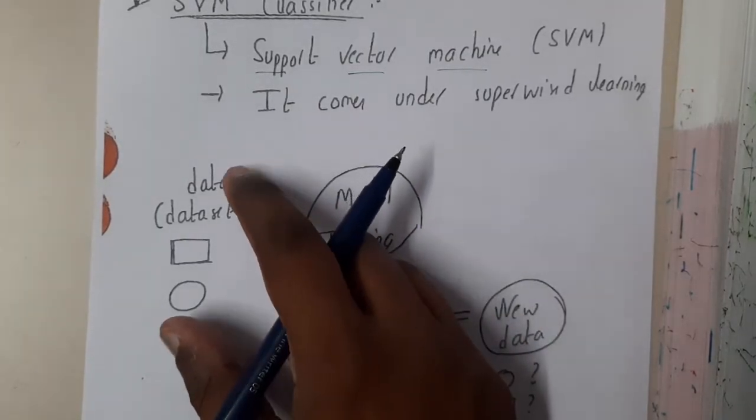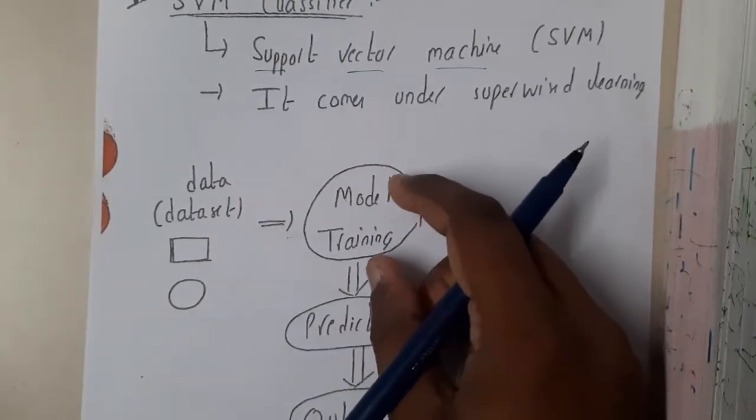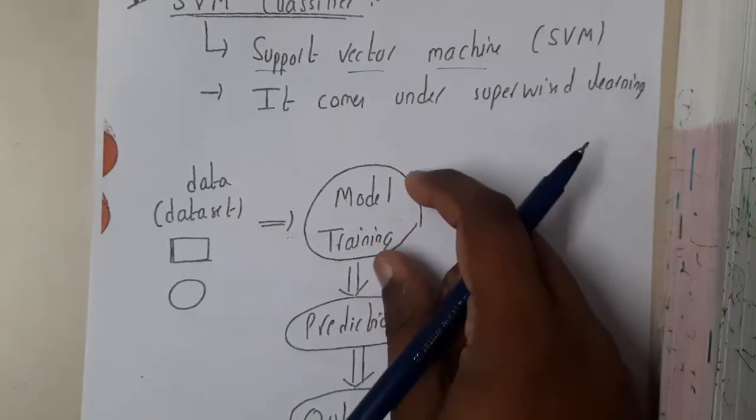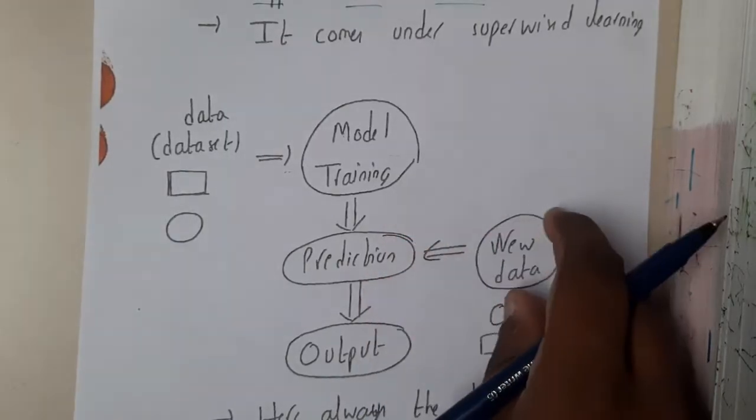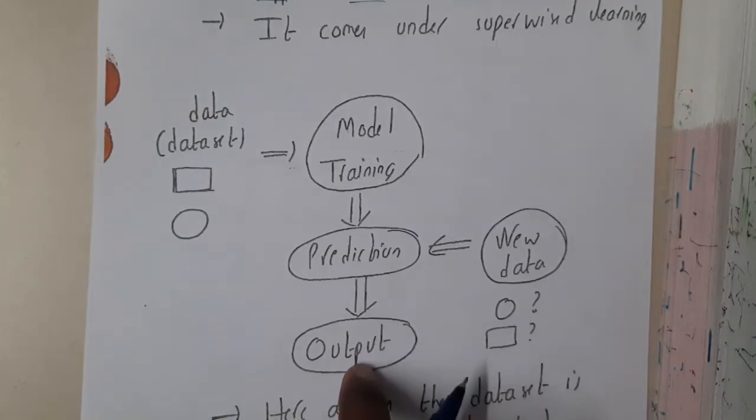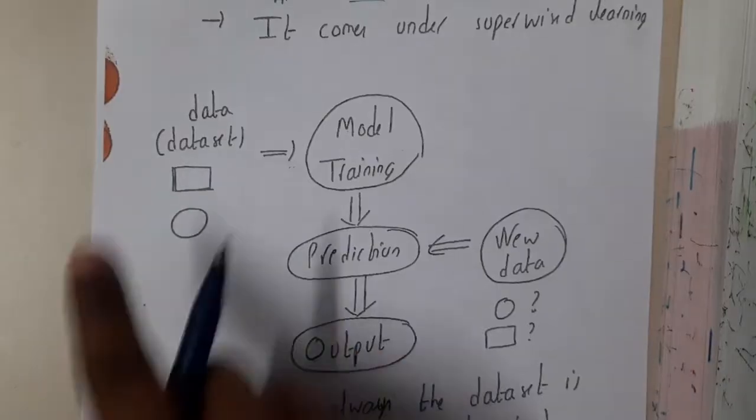This data set is given to the training model. So once the training is done, the model which we are going to design is called a predictor. So this predictor, on a new input data of unknown symbols, it will be giving you the output. So in this way it will work.